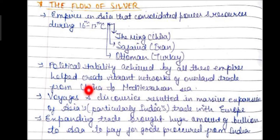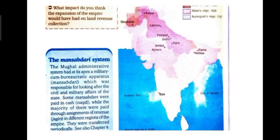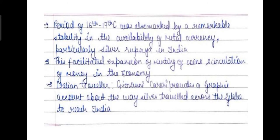Voyages and discoveries resulted in massive expansion of trade. Expanding trade brought huge amounts of bullion to Asia to pay for goods procured from India. The period of the 16th and 17th centuries was also marked by remarkable stability in the availability of metal currency, particularly the silver rupee in India.